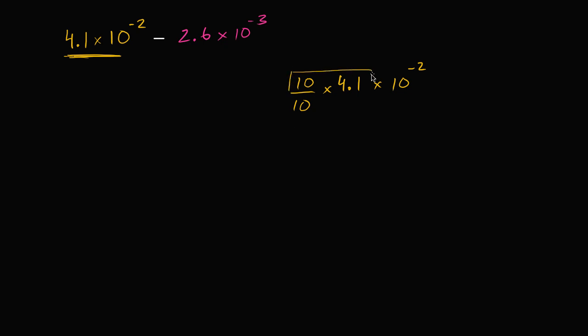And then you take 10 times 4.1, you get 41. And then 10 to the negative 2 divided by 10 is going to be 10 to the negative 3. So this is equal to 41 times 10 to the negative 3. And that makes sense. 41 thousandths is the same thing as 4.1 hundredths. And all we did is we multiplied this times 10 and we divided this times 10.